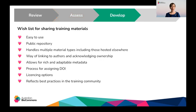So putting this all together, we headed into the development phase of our approach with a wish list of things for our sharing plan. Whatever plan we ended up putting into action needed to be easy to use, needed to use a public repository, and needed to handle multiple material types including those hosted elsewhere. It should have a way of linking authors and acknowledging ownership, and allow for rich and adaptable metadata. It needed a process for assigning DOIs and licensing options, and last but not least, it needed to reflect best practices within the training community.